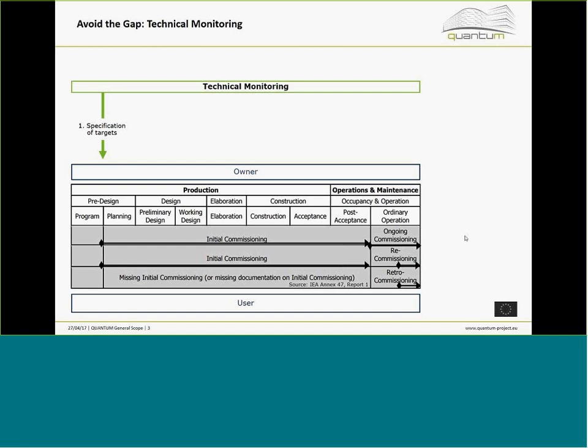What is also very important and often neglected is that you cannot just define targets — you must define how you measure them. Targets can be very vague, and it's not enough to just state a value. It is important for contractors to know how they will be tested; otherwise prices will go up and there will be insecurity in the project. So you must define the testing procedures, and then in the acceptance phase — pre-acceptance, post-acceptance, and operation — you carry out testing.